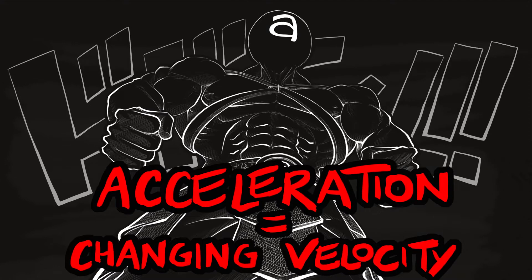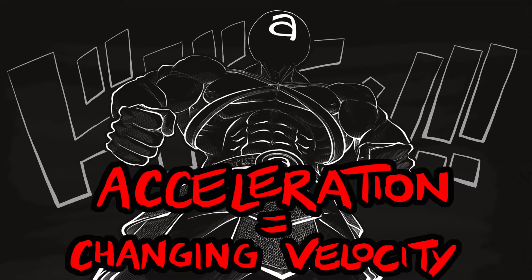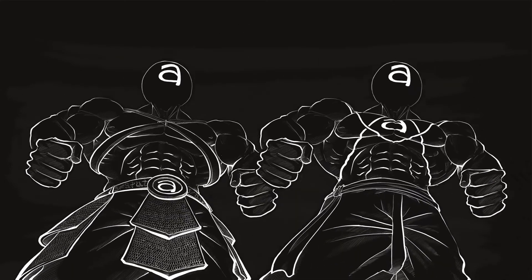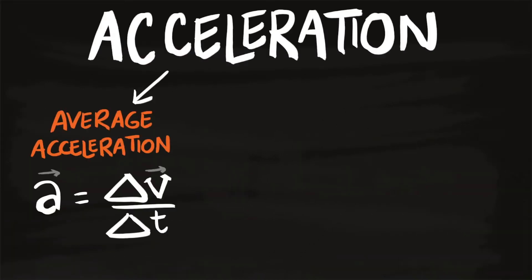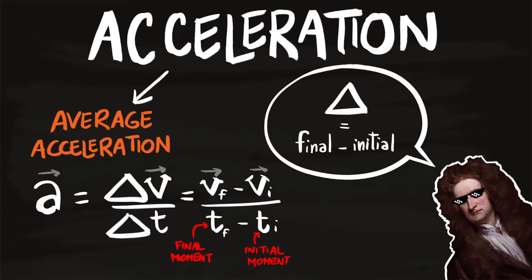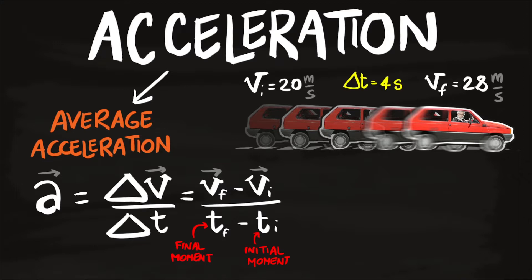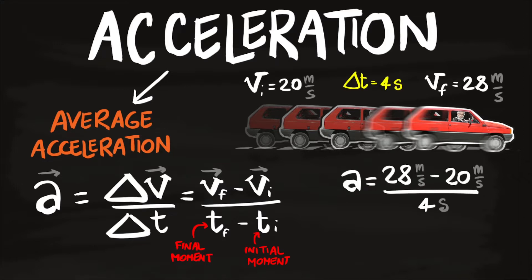Acceleration comes into play when speed starts to change. Since there is not a single speed but also velocity, there is not a single acceleration. You have two: average acceleration, calculated as Δv over Δt. The average acceleration between time tf and ti is the final velocity minus the initial velocity, divided by the time interval. For example, if grandpa goes from 20 m/s to 28 m/s in 4 seconds, his average acceleration is (28 - 20) / 4 = 2 meters per second squared.